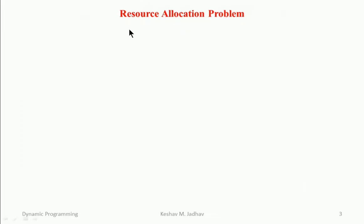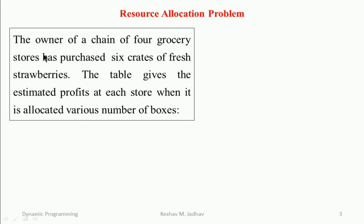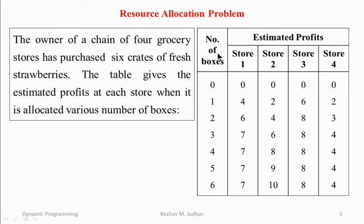Let us solve a resource allocation problem. The owner of a chain of four grocery stores has purchased six crates of fresh strawberries. The table gives the estimated profits at each store when it is allocated various numbers of boxes. There are four stores and these are the profit values for different numbers of boxes allocated to each store.